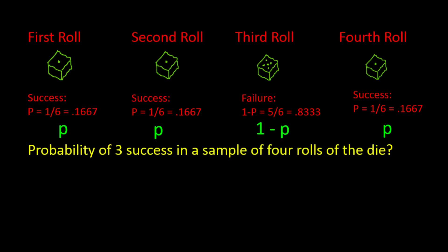Let's continue with this example of rolling a die 4 times. Suppose we observe the following results: a 1, another 1, not a 1, and another 1. What is the probability of having 3 successes — that is, 3 rolls where the die face shows the number 1 in a sample of 4 rolls? I wouldn't expect that probability to be very high, but let's see mathematically how it works out.